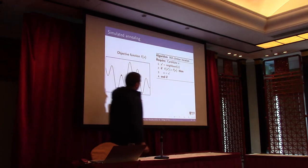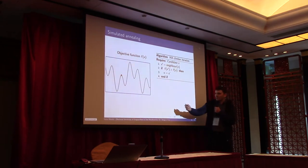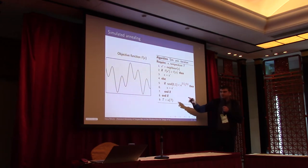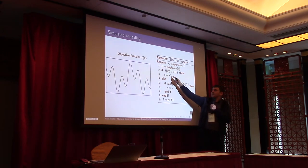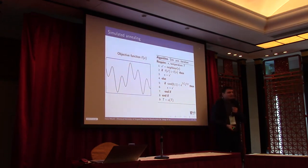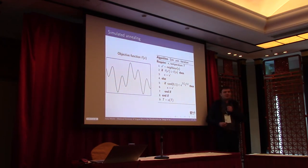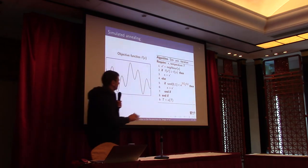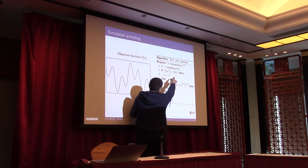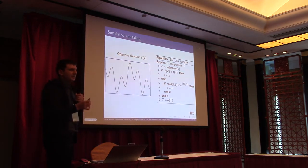Simulated annealing is very similar to hill climbing with just a few more lines of code. It generates a new candidate in the neighborhood. If the value of the objective function on the new candidate is better, it accepts it. But if the value is worse, it can still accept with some probability that depends on the iteration step. At the beginning, it accepts solutions with much worse values. Later, this probability reduces. The additional parameter is the temperature T, which changes over time, getting reduced — this decreasing temperature reduces the probability of accepting degrading solutions.